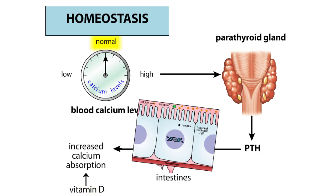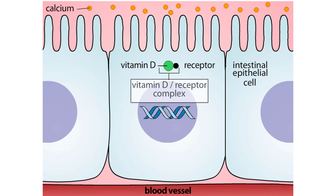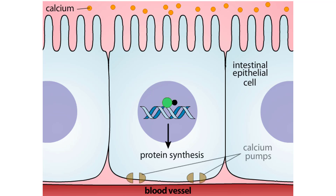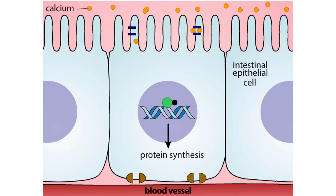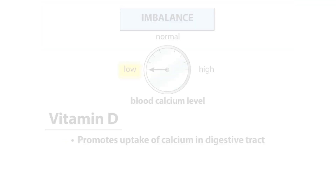The lipid-soluble vitamin D enters epithelial cells in the intestines and combines with a cytoplasmic receptor, forming a transcription factor. In the digestive tract, this transcription factor acts to increase the synthesis of calcium pumps, calcium channels, and calcium-binding proteins, all of which promote the uptake of calcium by the intestinal epithelia and its transport into the bloodstream.